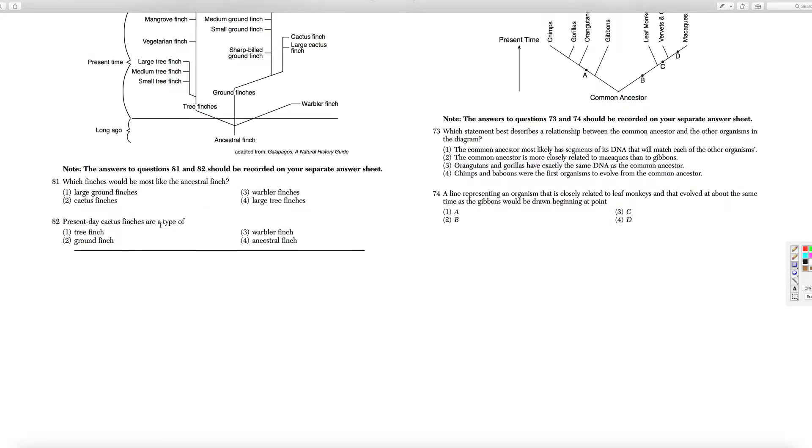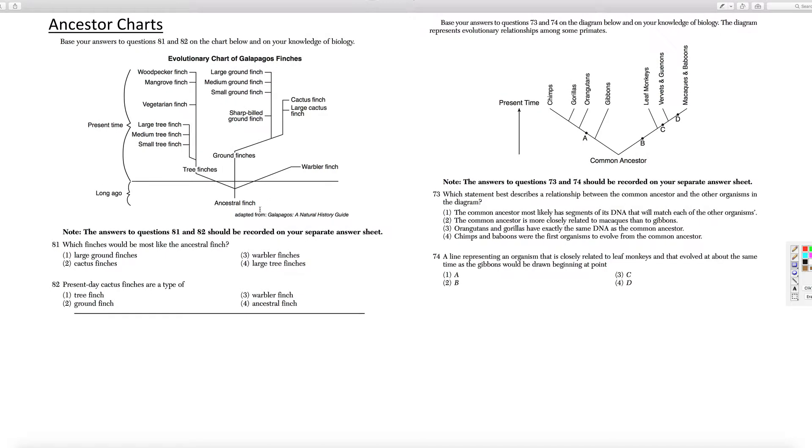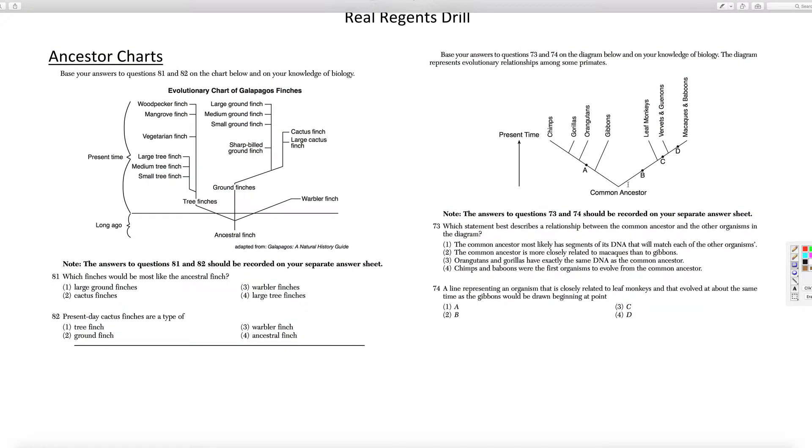Present-day cactus finches are a type of cactus finches. Ancestors are part of the ground family, exactly. This one had a weird question in here. Which statement describes the relation between the common ancestor and other organisms? The common ancestor has segments of DNA that will match each. The common ancestor is closely related to the mangroves. No. The orangutans and gorillas have the same DNA as the common ancestor. No. Chimps and baboons are the first organisms. No. So that's just one, that they'll each have similar DNA.